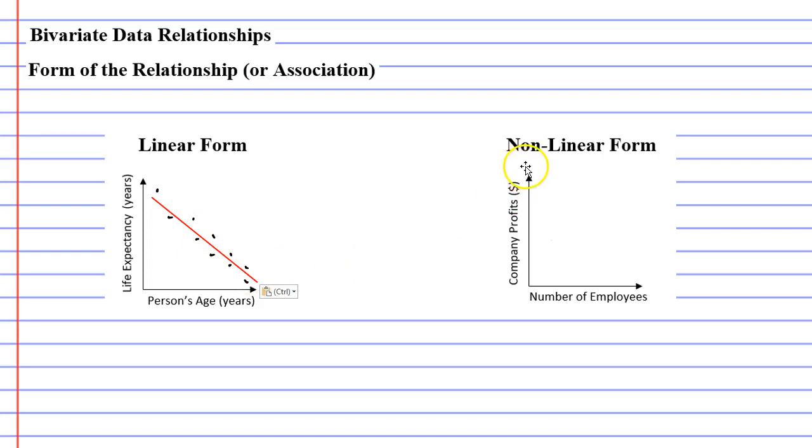Okay, so when we have our non-linear form, this is where we have our curves. An example of this might be the number of employees that a company has versus the company profits. So if you've got hardly any employees, you're not going to make much profit. And as you increase the number of employees that you have, your profits start going up.